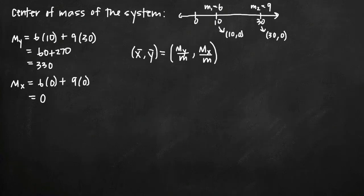Today we're going to be talking about how to find the center of mass of the system. And in this particular problem, we've been given the system of masses along the x axis where we have the origin here at zero and two masses, m sub 1 equals 6 and m sub 2 equals 9 at a distance of 10 units along the x axis and 30 units along the x axis respectively.